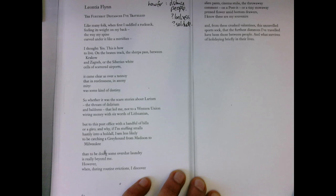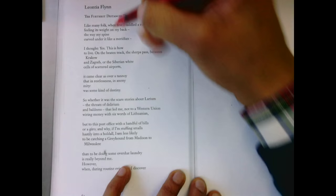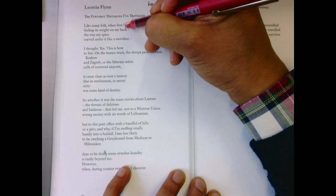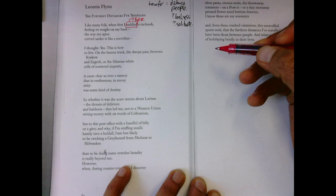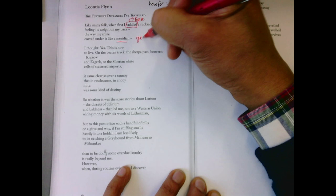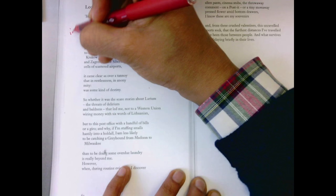Like many folk, when I first saddled a rucksack - saddled is something to do with horses, so she's in a way the horse, or she's riding herself or something, but that verb makes me think of horse riding. Feeling its weight on my back, the way my spine curved under it like a meridian. Geographic terms, geographic measurements, the image and the feeling of the backpack.